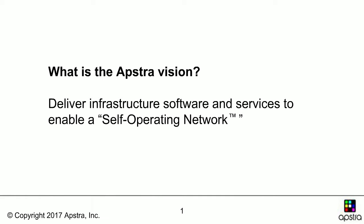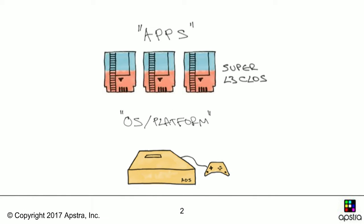Our product, AOS, is the first distributed operating system for the data center network. It runs on top of your hardware infrastructure and delivers full intent-driven, closed-loop, vendor-agnostic network lifecycle automation. We believe that ultimately most customers will be able to design, build, and operate their data center networks using our turnkey certified reference designs with minimal customization. AOS is like a game console into which you insert specific cartridges for specific use cases.